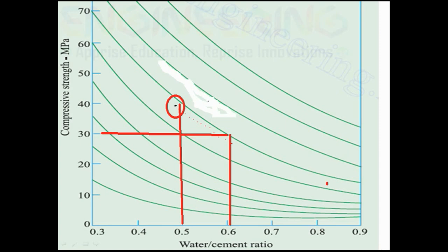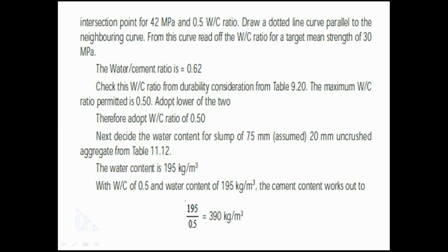First, with the help of the table we received 42 MPa and 0.5 water-cement ratio. After marking that black spot, I drew this dotted red line parallel to the green line. Then for 30 MPa I drew the horizontal line which cuts that red line at a point, and from that point I drew a vertical line which cuts the x-axis at approximately 0.6. So the water-cement ratio is approximately 0.62. Now we need to check this water-cement ratio from the durability consideration table.